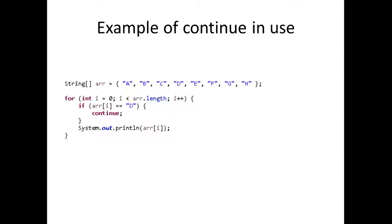Ultimately, if we were to run this code, what we would get with the system.out.println would be every element printed out except this D right here, this letter D. So if we were to execute this, we would get A, B, C, E, F, G, and H.